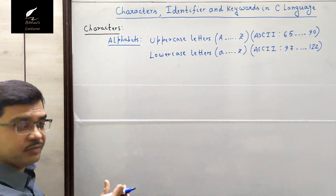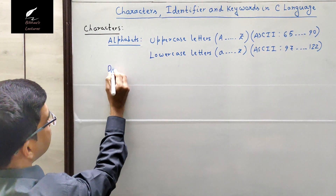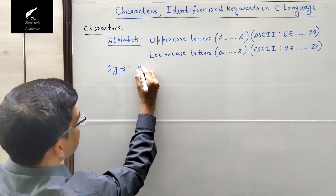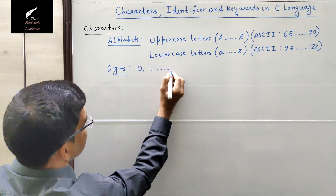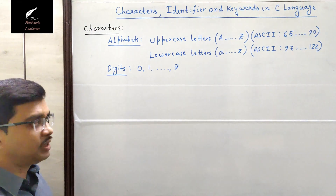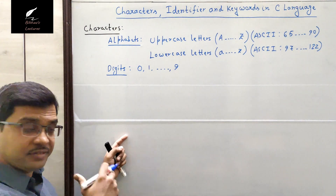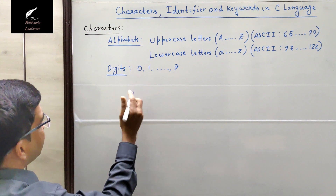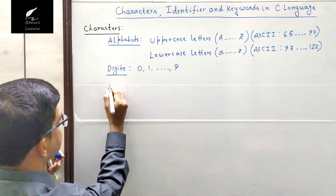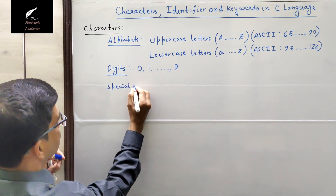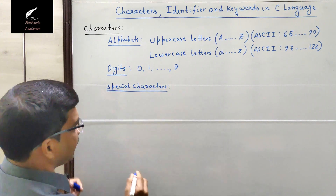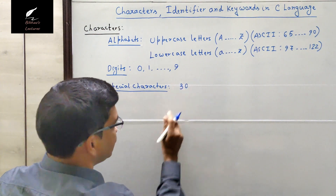Apart from alphabets, C language also accepts digits. Digits can vary from 0 to 9, so these 10 different digits can be used as characters in C language. Apart from digits, special characters can also be used in C language. There are 30 special characters in total.